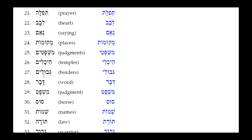Number twenty-five: Gevulim — the Hirik Yod Mem Sofit drops off and a Seri Yod takes its place. The Shurik is a historical long vowel and does not reduce; the simple Sheva under the Gimel is already fully reduced. Result: Gevulei — the masculine plural construct for 'borders.'